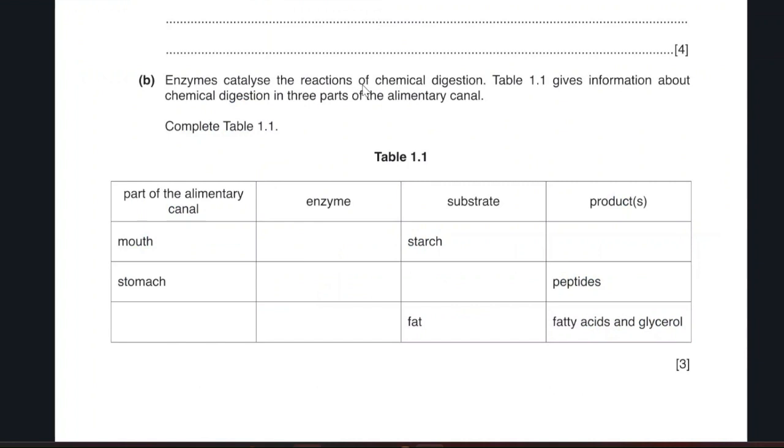Enzymes catalyze the reaction of chemical digestion. Table 1.1 gives information about the chemical digestion in three parts of the alimentary canal. We have the mouth, the stomach, and the third part is missing. What is the enzyme in the mouth? Enzyme in the mouth is the amylase, salivary amylase enzyme. It digests starch into maltose sugar. And the stomach has a protease enzyme.